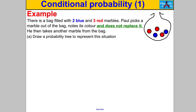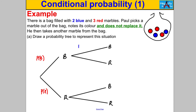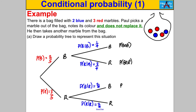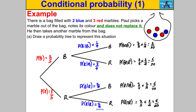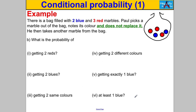Let's try another example — pause the video and have a go. On the first pick, the probability of a blue is two out of five and a red is three out of five. If he picked a blue, the probability of getting another blue is now one out of four, and the probability of a red given he took a blue is three out of four. If instead he took a red on the first pick, the probability of a red given a red is two out of four, and the probability of a blue given a red is also two out of four. We then multiply along the branches.